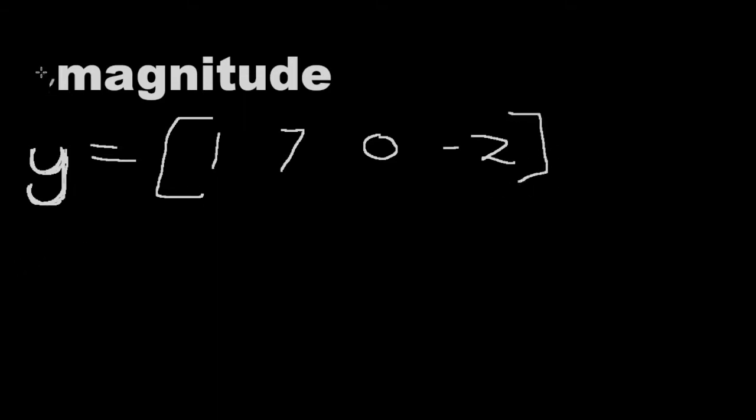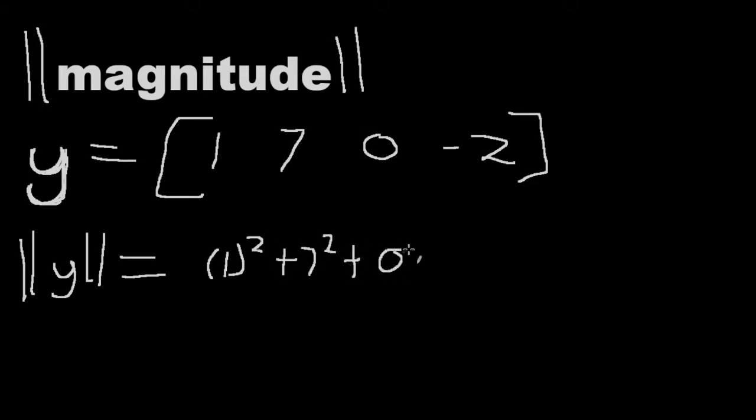And magnitude is often shown by these two bars on either side. So if you have some sort of question for example where it's what is the magnitude of y. It'll say well the magnitude of y is 1 squared plus 7 squared plus 0 squared. I'll put these in parentheses. So that's how it's often represented. Plus negative 2 squared. And then the square root of all that.